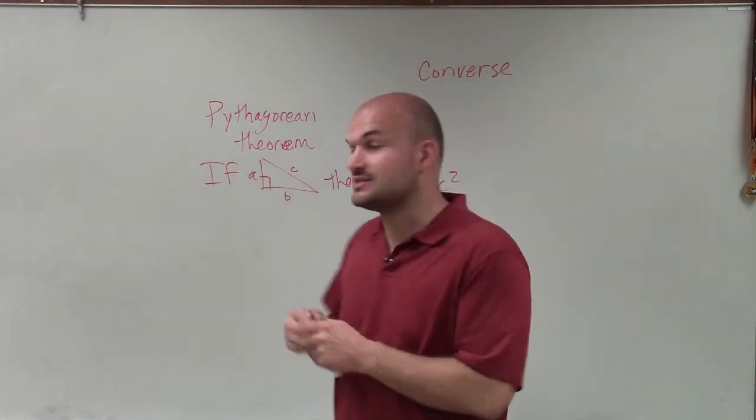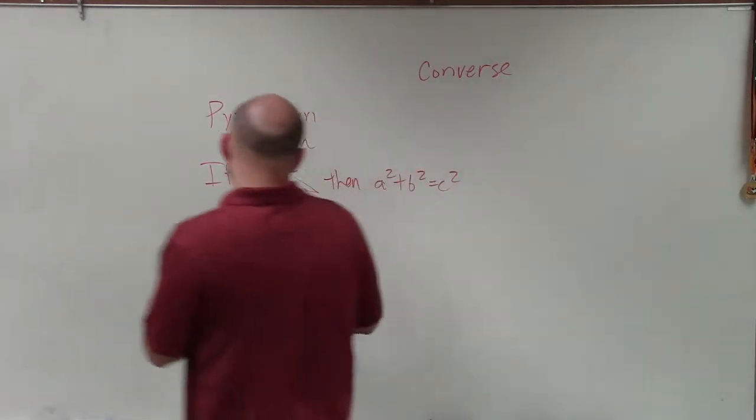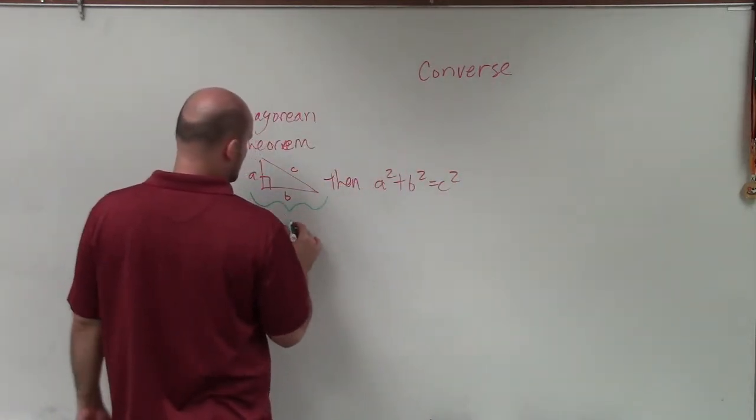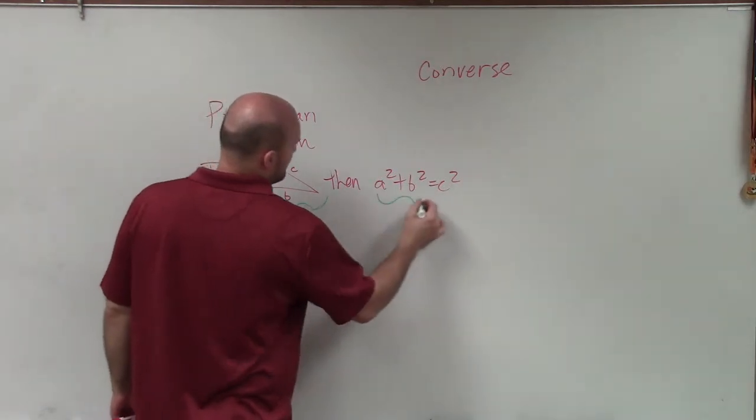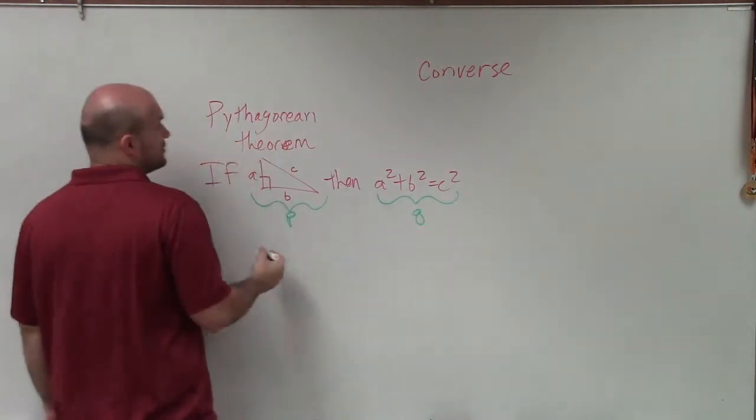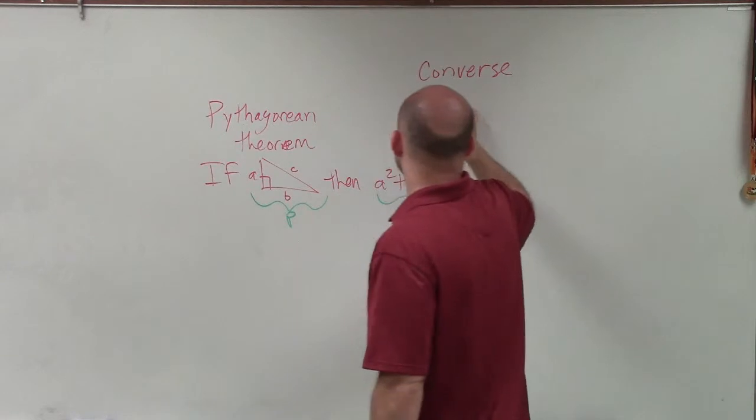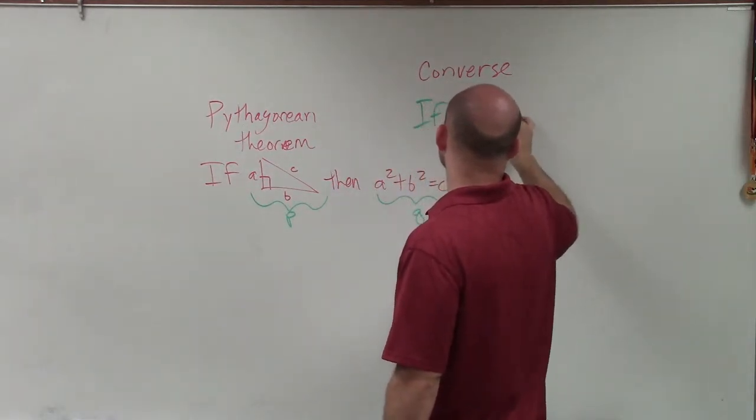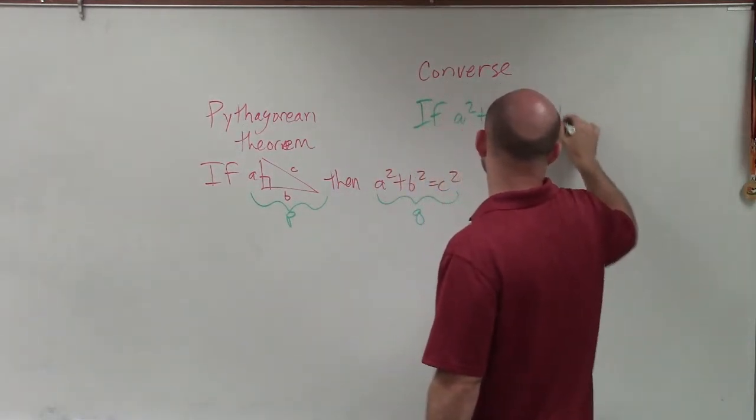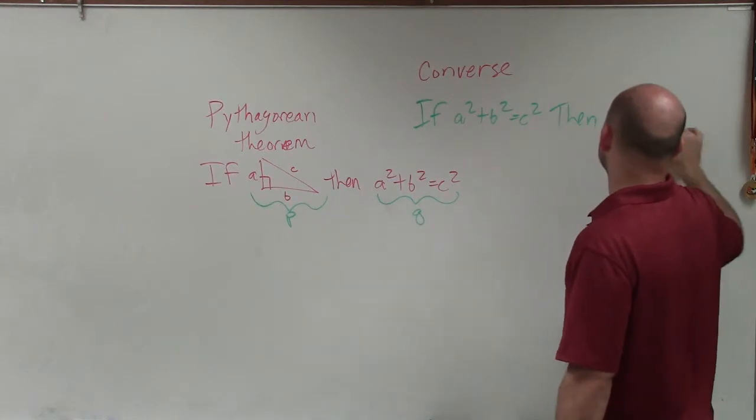So the converse would simply be swapping our P and our Q, our hypothesis and our conclusion. So that would be our P, and that would be our Q. The converse simply states: if a squared plus b squared equals c squared, then you have a right triangle.